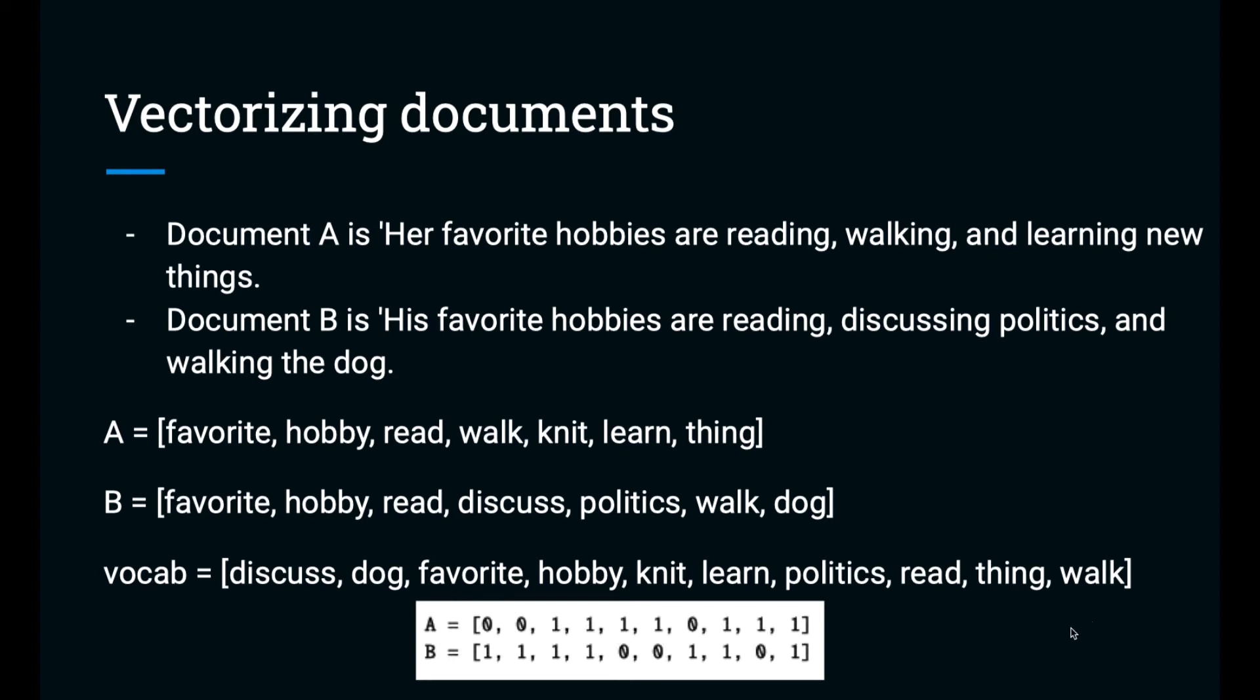Once we have a vocabulary, we can create the vectors. For example, A doesn't have discuss or dog. It does have favorite hobby, knit, learn, no politics, read, thing, and walk.